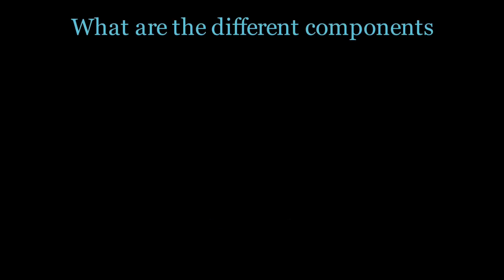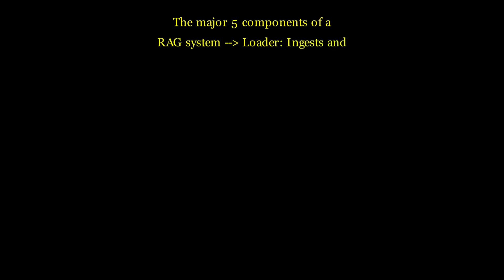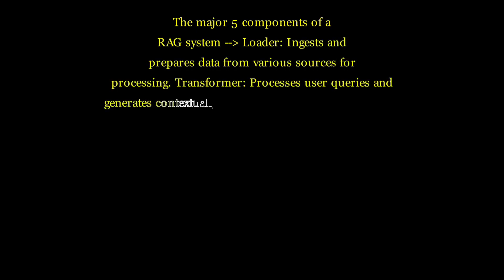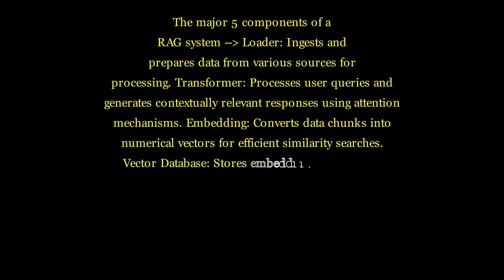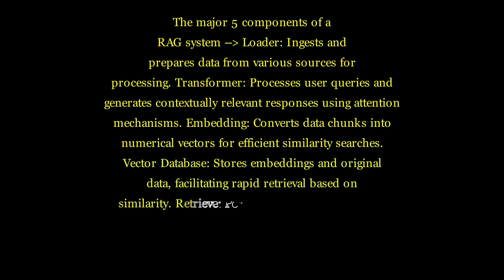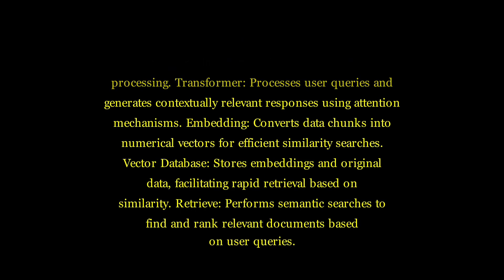What are the different components of the RAG framework? The five major components of a RAG system are: Loading, which ingests and prepares data from various sources; Transformer, which processes user queries and generates contextually relevant responses using attention mechanisms; Embedding, which converts data chunks into numerical vectors for efficient similarity searches; Vector Database, which stores embeddings and original data facilitating rapid retrieval based on similarity; and Retriever, which performs semantic searches to find and rank relevant documents based on user queries.